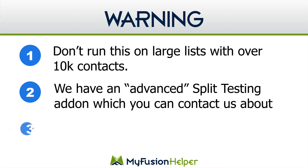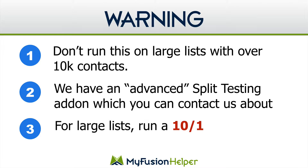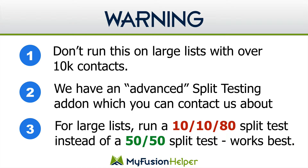That is an option, but I'm also going to show you another way for larger lists — let's say you've got 30,000 or 50,000 people on your list. Instead of running a 50-50 split test, which is considered an A-B split test, you can run what's called a 10-10-80 split test.